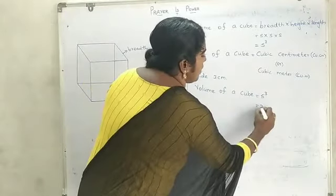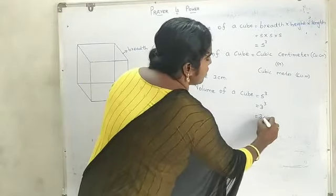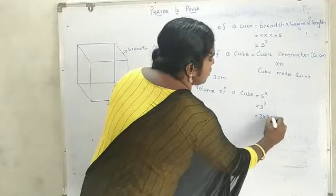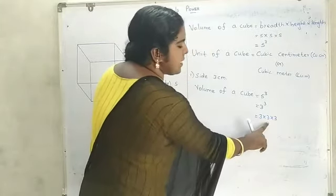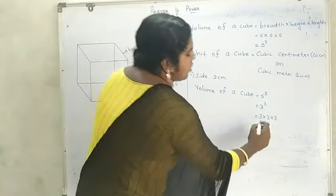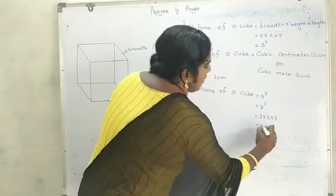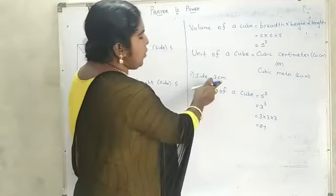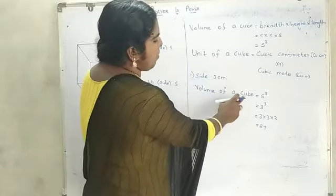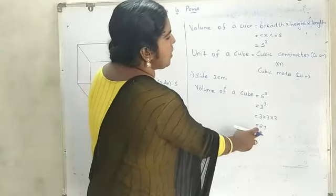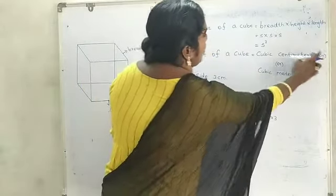Therefore, volume equals 3 cube, which means 3 into 3 into 3. 3 times 3 is 9, and 9 times 3 is 27. The unit is cm, so the volume of a cube is 27 cm cube, that is 27 cubic centimeter.